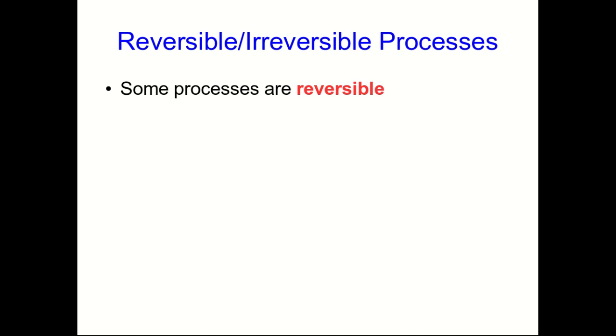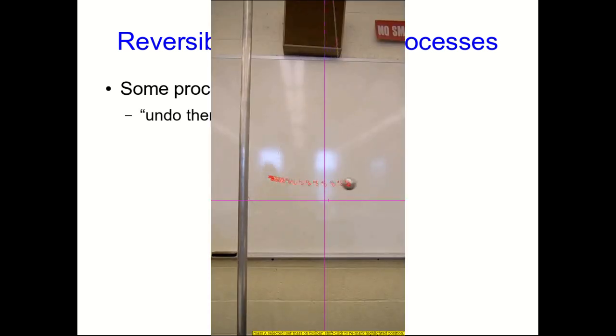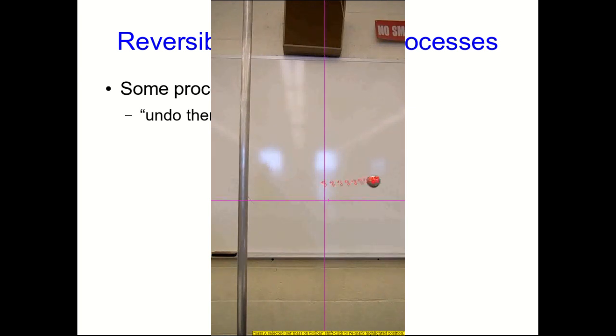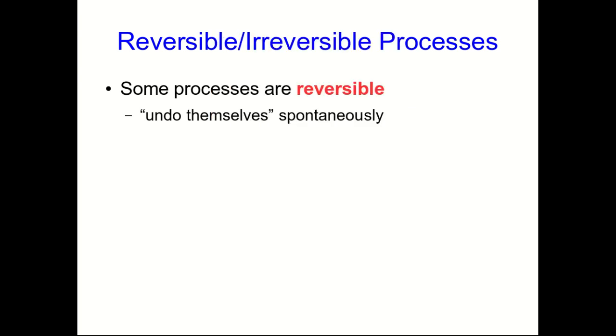Some processes are what we call reversible, and that means that they can undo themselves spontaneously. By spontaneously, I mean without us interfering. So for example, here's a pendulum swinging back and forth, and it can undo itself. You can think of the swing to the right as the process, and it undoes itself as the pendulum swings back to the left.